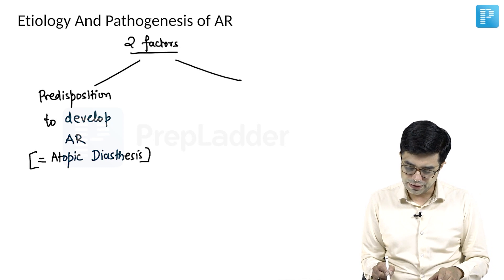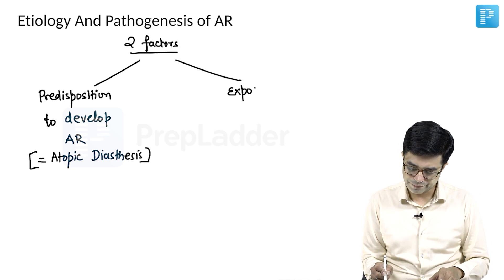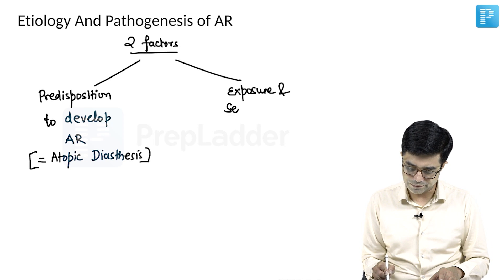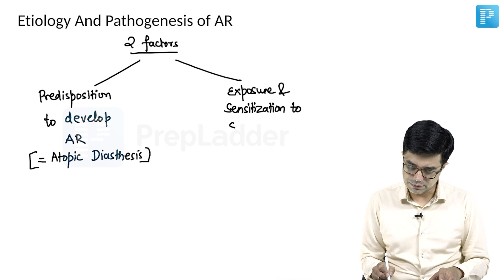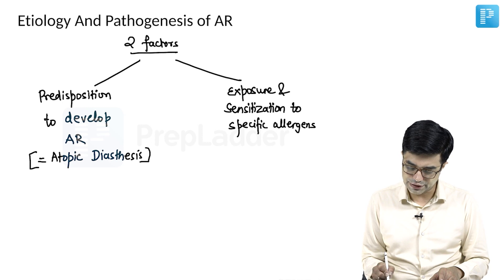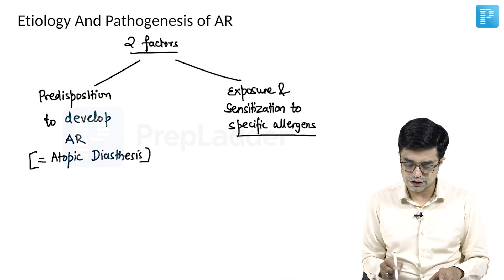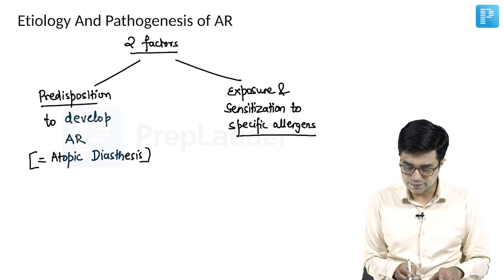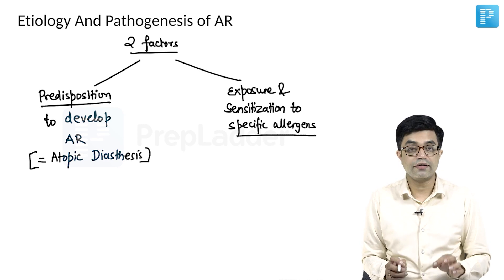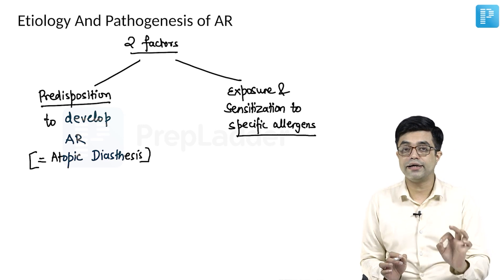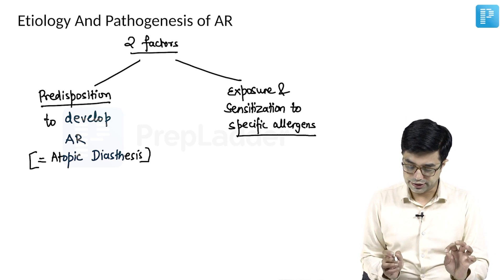Second, there should be exposure and sensitization — both are important — exposure and sensitization to specific allergens. If both of them are present along with predisposition, the child has a high likelihood of developing allergic rhinitis.